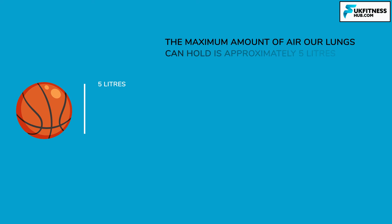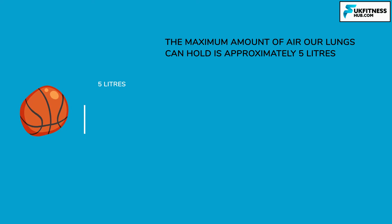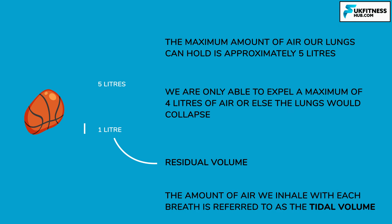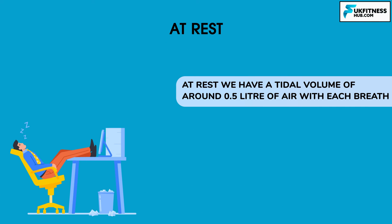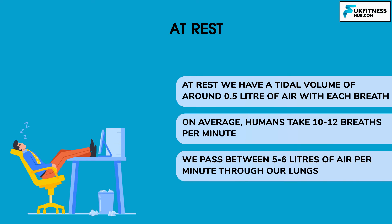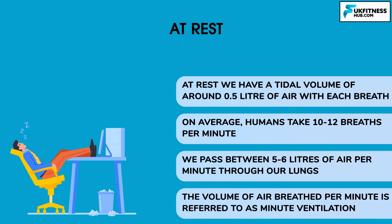The maximum amount of air our lungs can hold is approximately 5 litres — roughly equivalent to the amount of air in a basketball. We are only able to expel a maximum of 4 litres of air, or else the lungs would collapse. The residual 1 litre of air is called the residual volume. The amount of air we can inhale with each breath is referred to as the tidal volume. At rest, we have a tidal volume of around 0.5 litres per breath. On average, humans take between 10 to 12 breaths per minute, meaning we pass between 5 to 6 litres of air per minute through our lungs — referred to as minute ventilation.